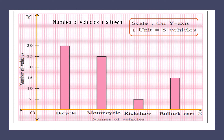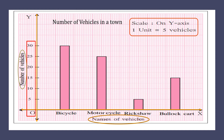Next, we need to specify what we are showing on the x-axis and y-axis. On the y-axis we are showing number of vehicles, and on the x-axis the names of vehicles are given. These are the elements of the graph.